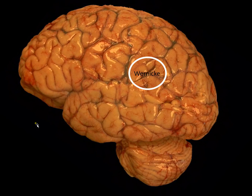Wernicke's area holds neurons that are responsible for helping us to understand language. So if someone is speaking to you in a language that you understand, Wernicke's region is full of neurons that help you understand what someone else is saying. And I'm saying language, but it's not just speech — it includes speech as well as written language and also sign language. Wernicke's area is responsible for helping you understand language that is coming in and that you're processing.